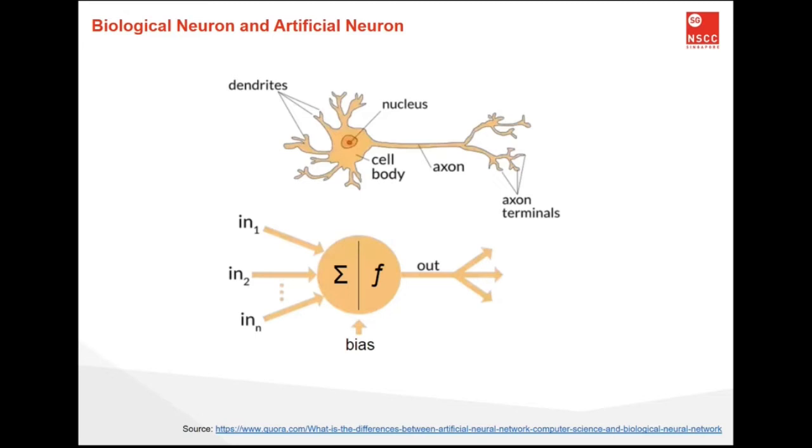Connections can become stronger or weaker. New connections can appear while others can cease to exist. We can mimic most of this process by coming up with a function that receives a list of weighted input signals and outputs some kind of signal if the sum of these weighted inputs reach a certain bias.